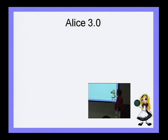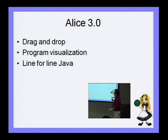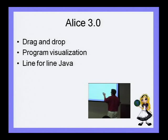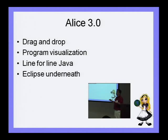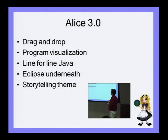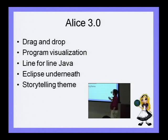So what is ALICE 3 going to be? It's going to be drag-and-drop, program visualization, and line-for-line Java. The old ALICE had its own virtual machine, but ALICE 3 will be all Eclipse underneath to facilitate the transition when the professor decides to make that move. We're going to have the storytelling theme from Caitlin's dissertation and we're going to use The Sims 2 assets to pull it off.